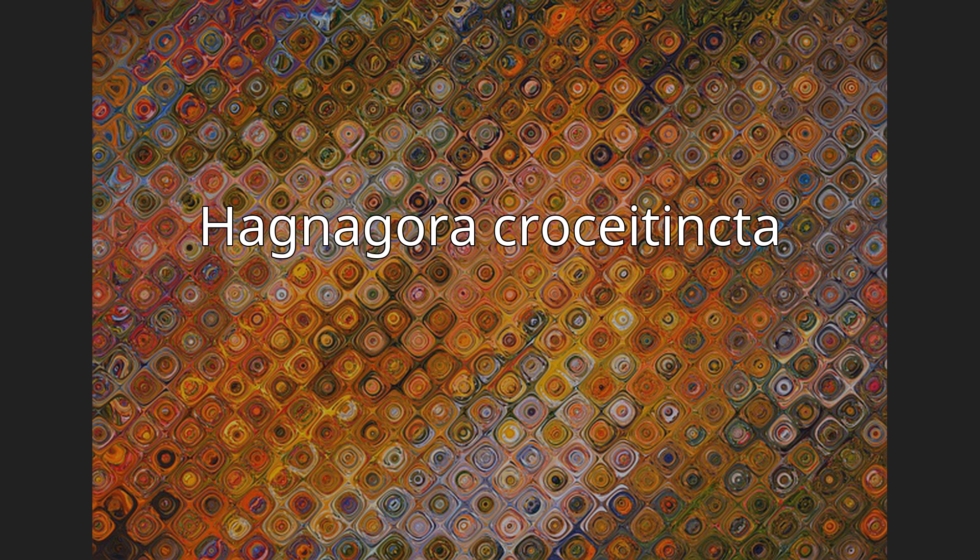Hagnagora crocetincta is a species of moth of the family Geometridae, first described by Paul Dognin in 1892. It is found from central Colombia to southeastern Peru.